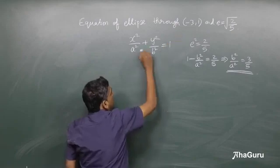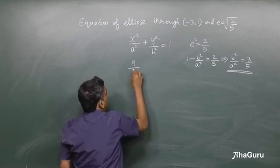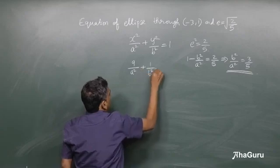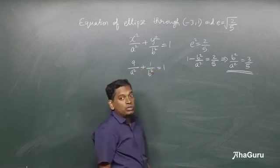The other equation is that the ellipse passes through minus 3, 1. So 9 by a squared plus 1 by b squared is equal to 1.